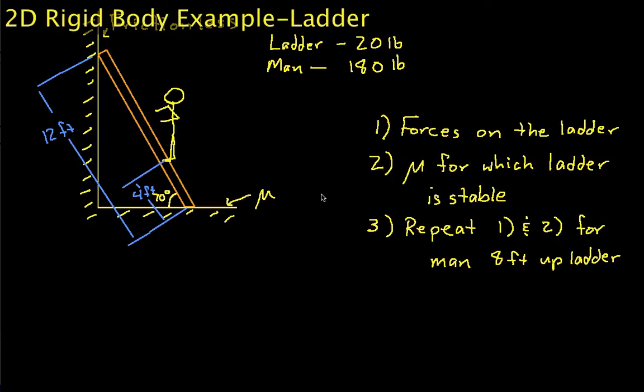Welcome to this video in which we do a two-dimensional static equilibrium rigid body analysis of a ladder. Our goals for this are written on the video. First is to find the forces on the ladder when we have a 180 pound man standing four feet from the bottom edge. You can tell it's a man because a woman would not be so foolish as to stand there without holding on to the ladder.